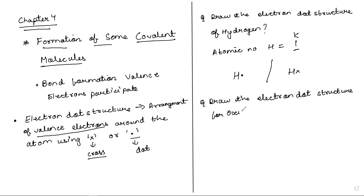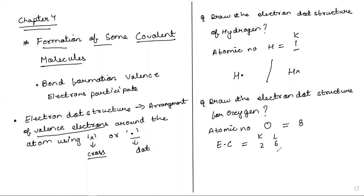Draw the electron dot structure for oxygen. The atomic number of oxygen is 8. The electronic configuration is 2, 6. The outermost shell has 6 electrons, so the valence electrons are 6. Around the oxygen atom, you represent 6 electrons — 1, 2, 3, 4, 5, 6.